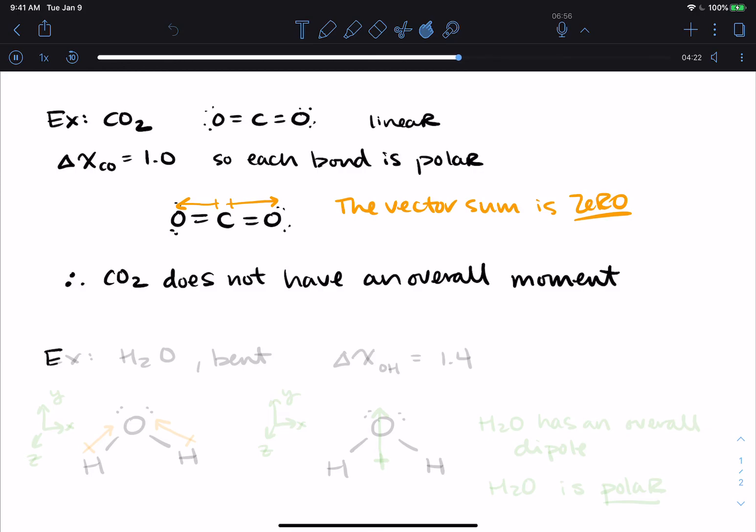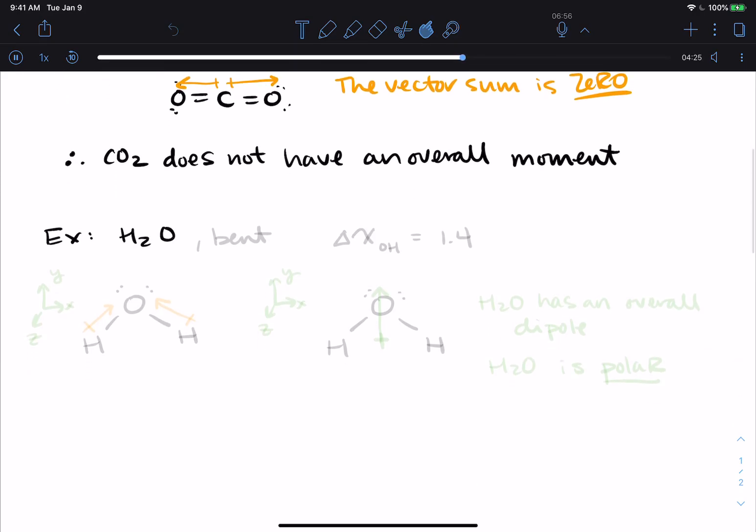One more example. Let's do H2O, which we have looked at already. It's a bent molecule. The difference in electronegativity between oxygen and hydrogen is 1.4.